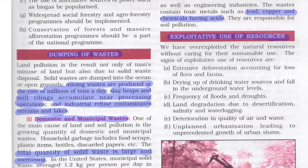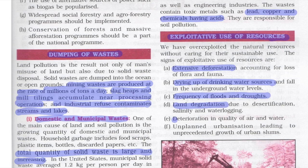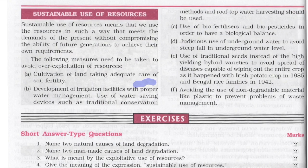We have already over-exploited our natural resources without caring for their sustainable use. Signs of exploitative use of resources include extensive deforestation causing loss of flora and fauna, drying up of drinking water sources, increased frequency of floods and droughts, land degradation, deterioration in the quality of air and water, and unplanned urbanization leading to unprecedented growth of urban slums. Sustainable use of resources means using resources to meet the demands of the present without compromising the ability of future generations to meet their own requirements. Measures include cultivation of land with adequate care for soil fertility.